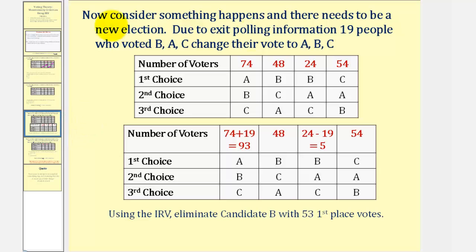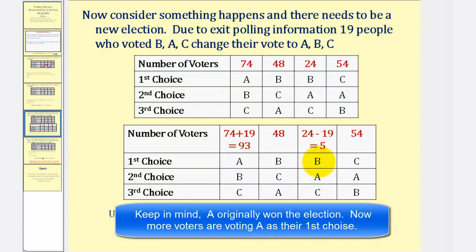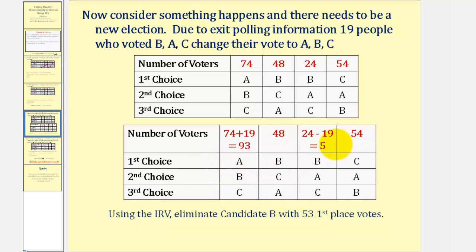But now let's consider that something happens and there needs to be a new election. Due to exit polling information, let's say 19 people who voted in the order of BAC change their vote to ABC. So 19 of these votes switch to the column of ABC, which means 19 people changed their first choice from B to A and their second choice from A to B. So we would think that since 19 people changed their vote from B to A, this should not prevent A from winning the election.